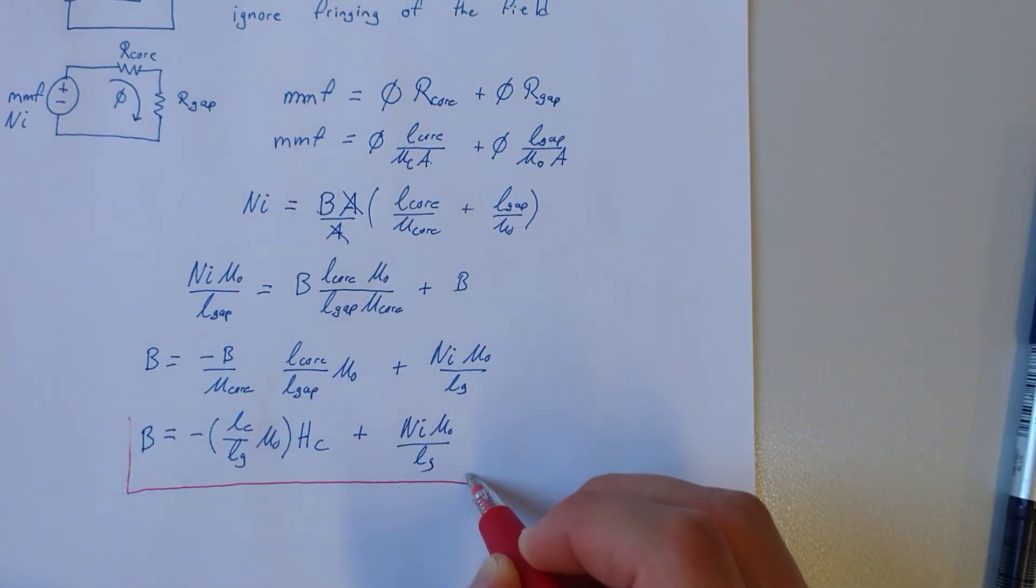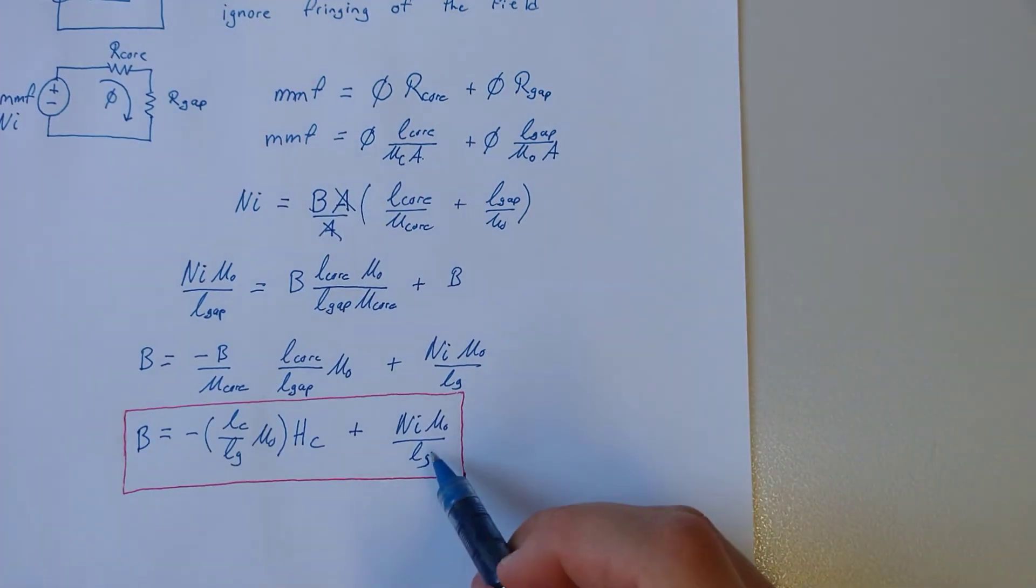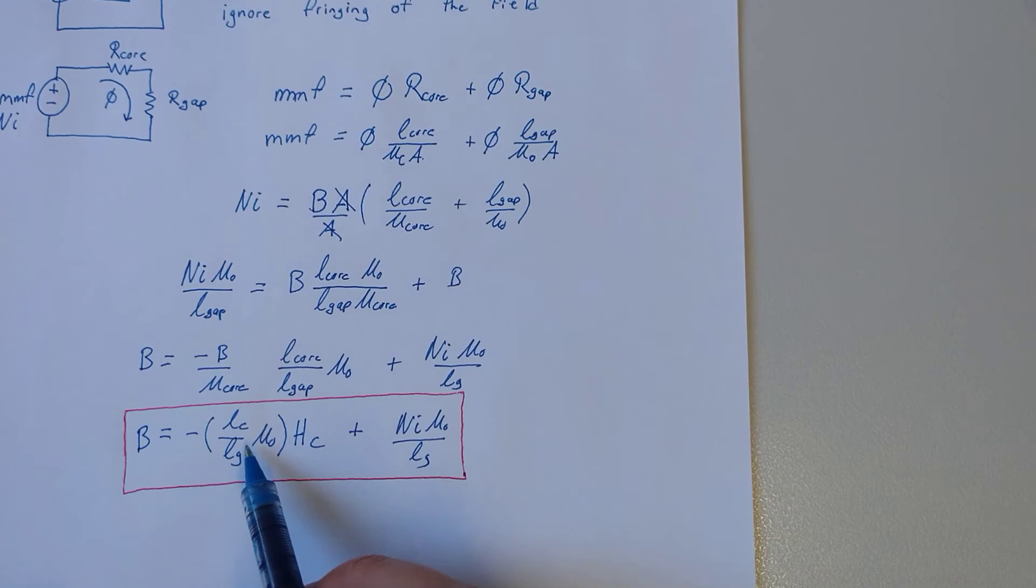This term is constant. This term is constant. That's variable and that's variable. So this looks like y equals mx plus b.